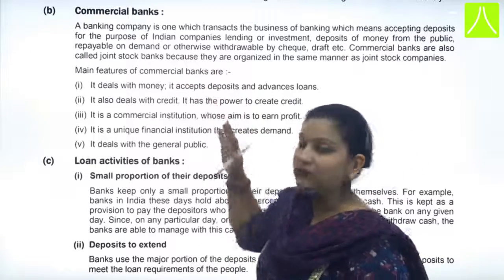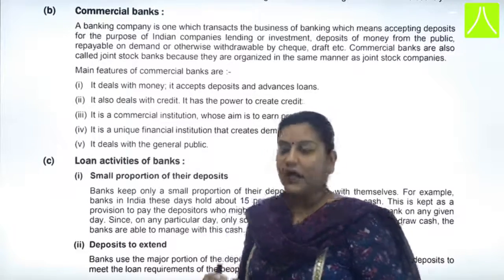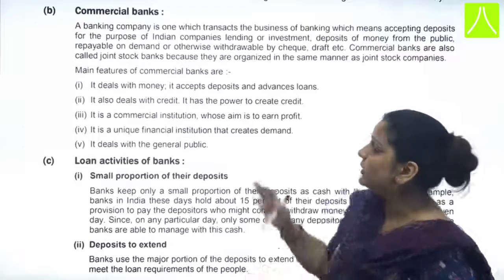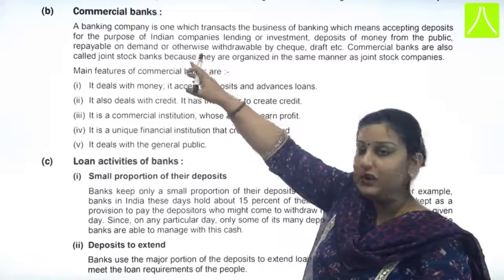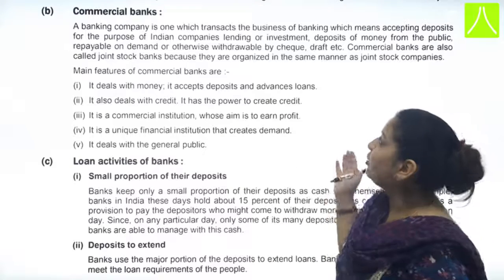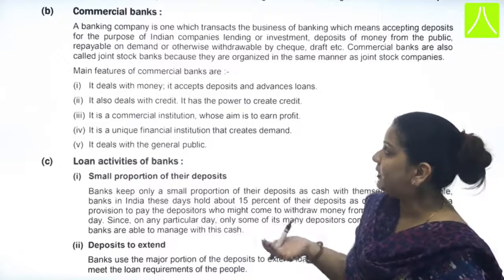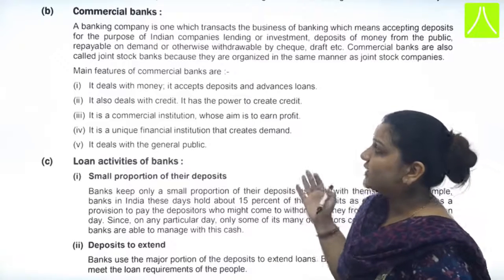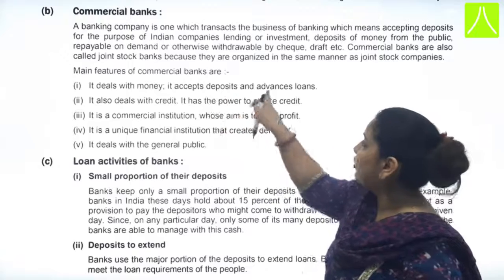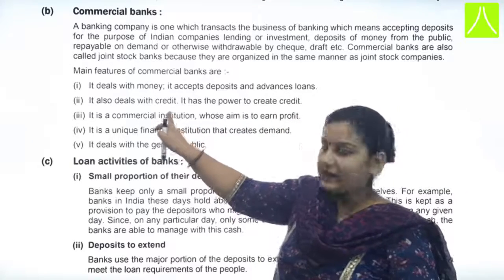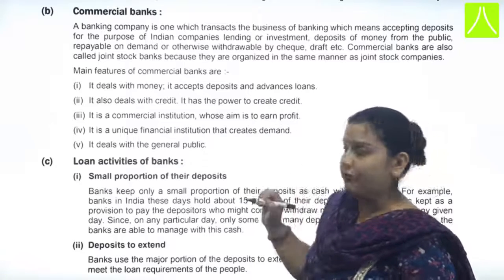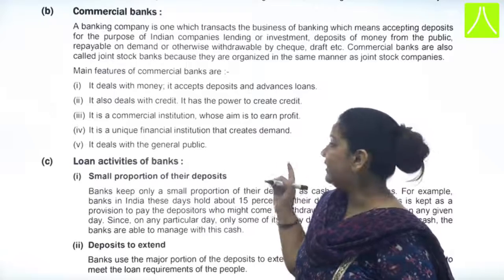These commercial banks are the ones with which we as public are dealing with — we use banking services, and these are known as commercial banks. Coming directly to the main features of commercial banks: it deals with money, it accepts deposits and advances loans, it deals with credit and has the power to create credit. It is a commercial institution aiming to earn profit — a unique financial institution dealing with the general public.